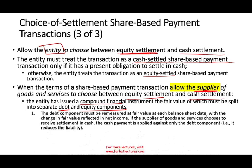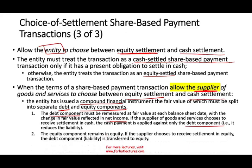The debt component must be re-measured at fair value at each balance sheet date with the change in fair value reflected in net income. If the supplier chooses to receive cash settlement, the cash payment is applied against the debt component and the equity component remains in equity. If the supplier chooses to receive settlement in equity, the debt is transferred to equity — we debit the debt and credit equity.